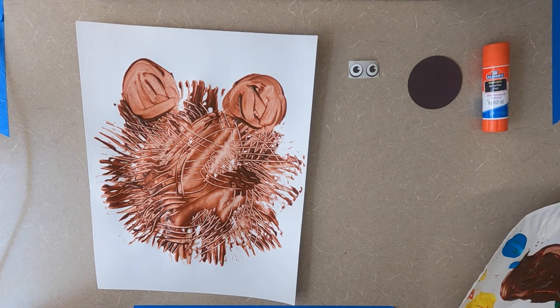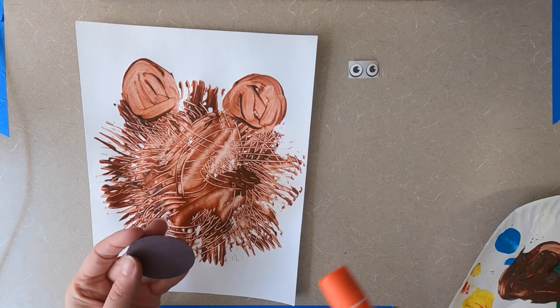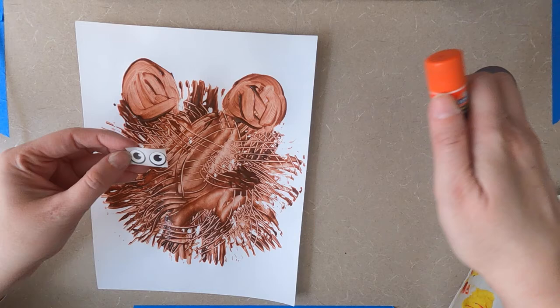And you probably want to wait a little bit until it's dry. And when it's dry, you'll take your glue stick and stick the nose on the bear. And when it's ready, you can put the eyeballs on the bear too.